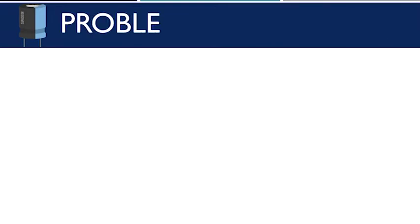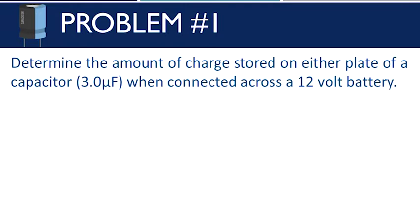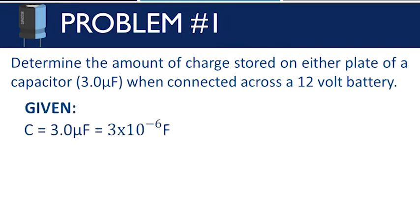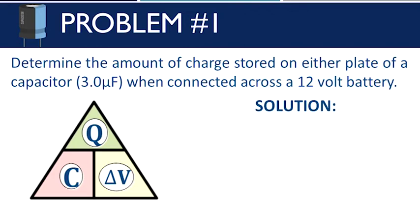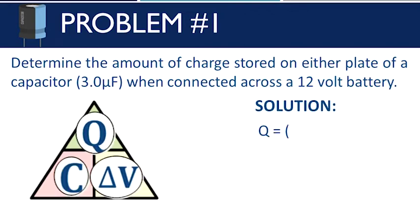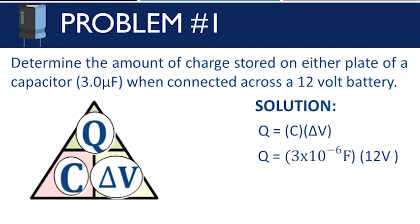Let's solve problem number 1: determine the amount of charge stored on either plate of a capacitor of 3 microfarad when connected across a 12-volt battery. Given: C = 3 microfarad (3 × 10⁻⁶ F), ΔV = 12 V. Unknown: Q. Using Q = C × ΔV, Q = 3 × 10⁻⁶ F × 12 V = 3.6 × 10⁻⁵ Coulomb.